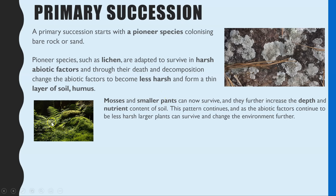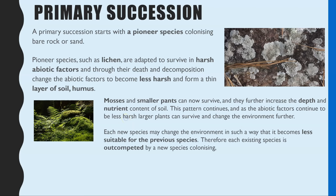This process continues: as those mosses and smaller plants die and decay, they increase the nutrient content and depth of the soil. You now have thicker soil with more nutrients that can hold even more water, which means larger plants with bigger roots are able to survive. Each new species changes the environment, making it less hostile but also less suitable for the previous species, which then gets out-competed and may disappear from the habitat.